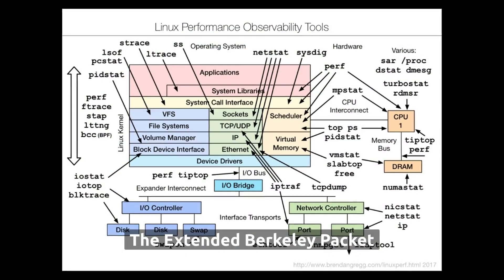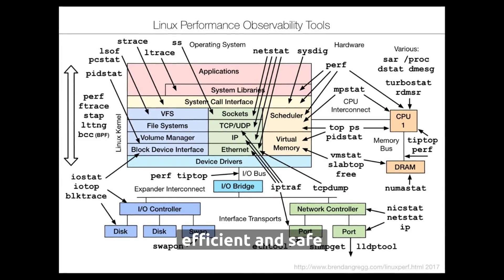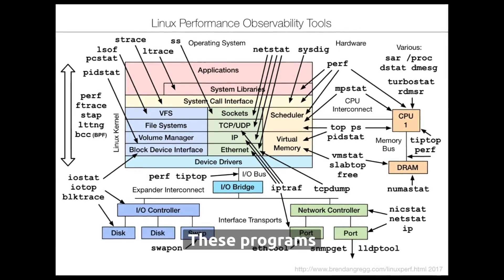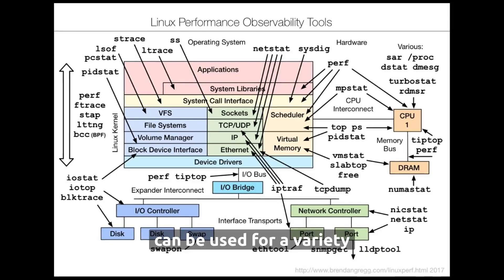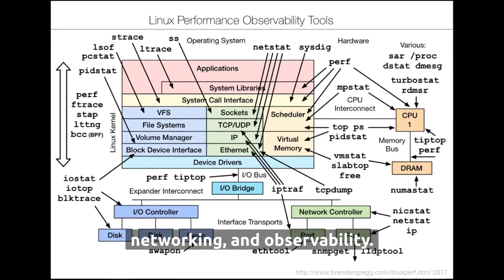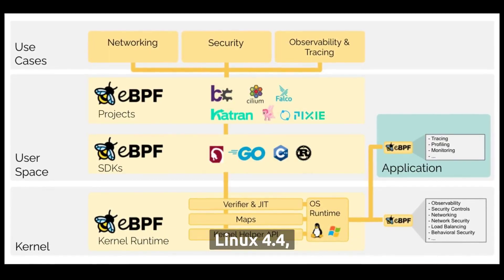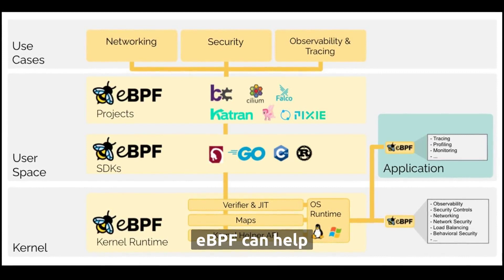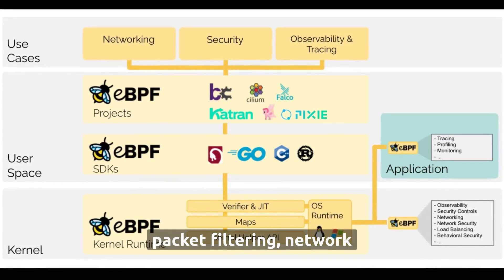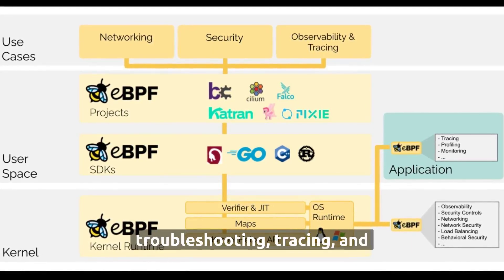The Extended Berkeley Packet Filter is a Linux kernel technology that allows for efficient and safe execution of user-specified programs within the kernel. These programs can be used for a variety of use cases, including security, networking, and observability. Fully available since Linux 4.4, eBPF can help developers and administrators with many tasks such as packet filtering, network monitoring, system troubleshooting, tracing, and profiling.